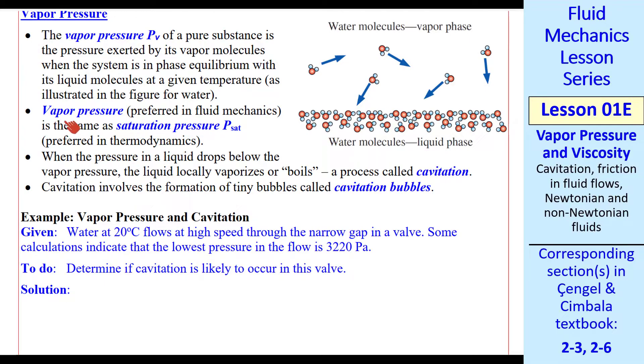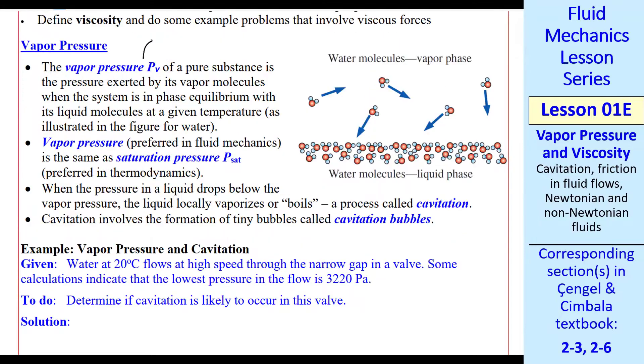Fluid mechanics people like to say vapor pressure, but it's exactly the same as saturation pressure, PSAT, which thermodynamicists prefer. It is a pressure, so its dimensions are force per length squared, and its units are typically pascals or kilopascals.